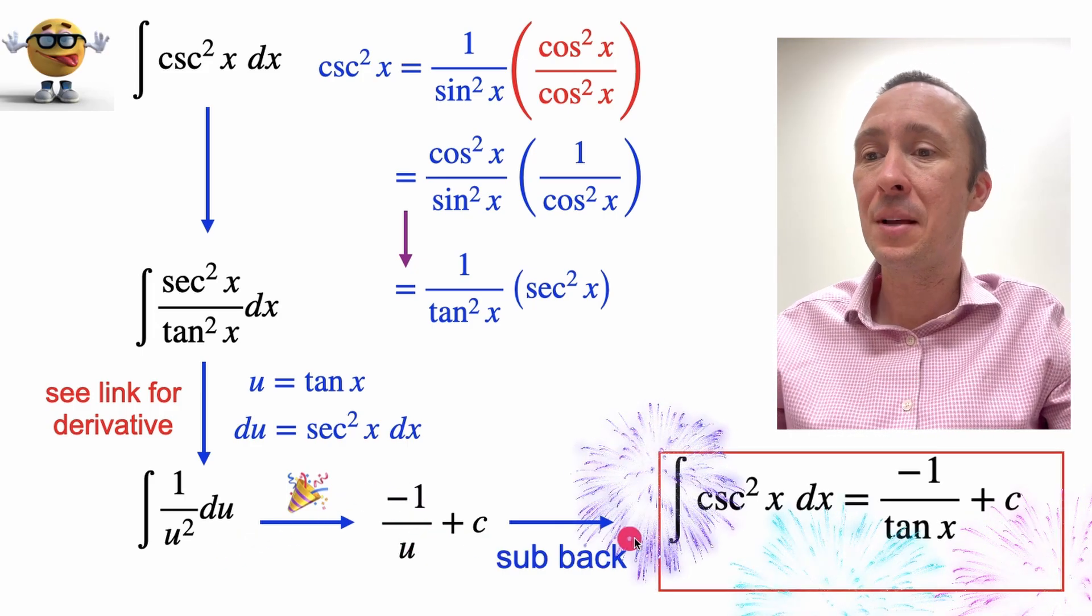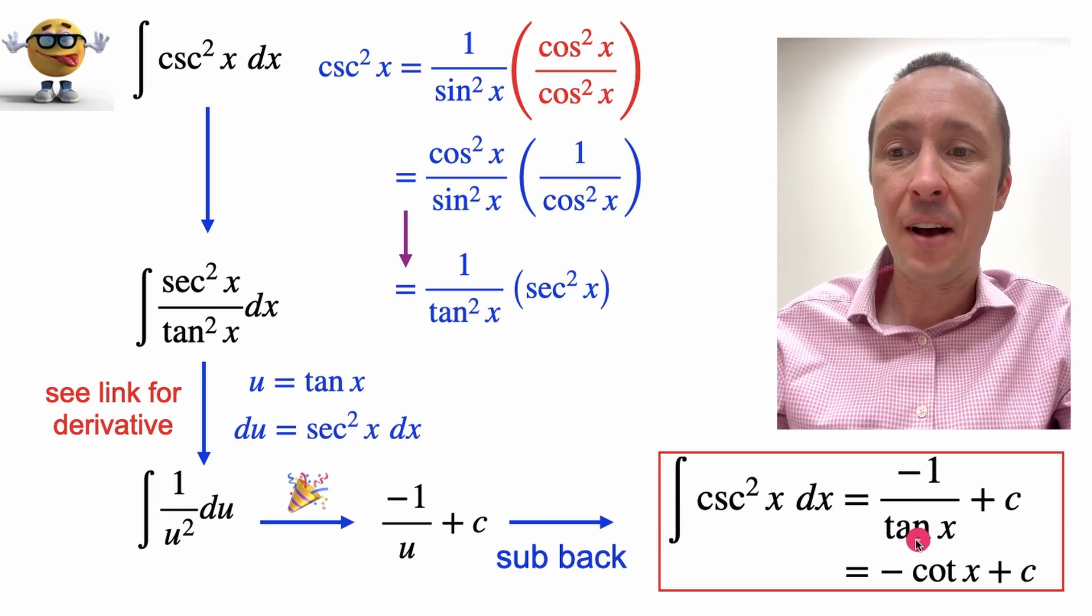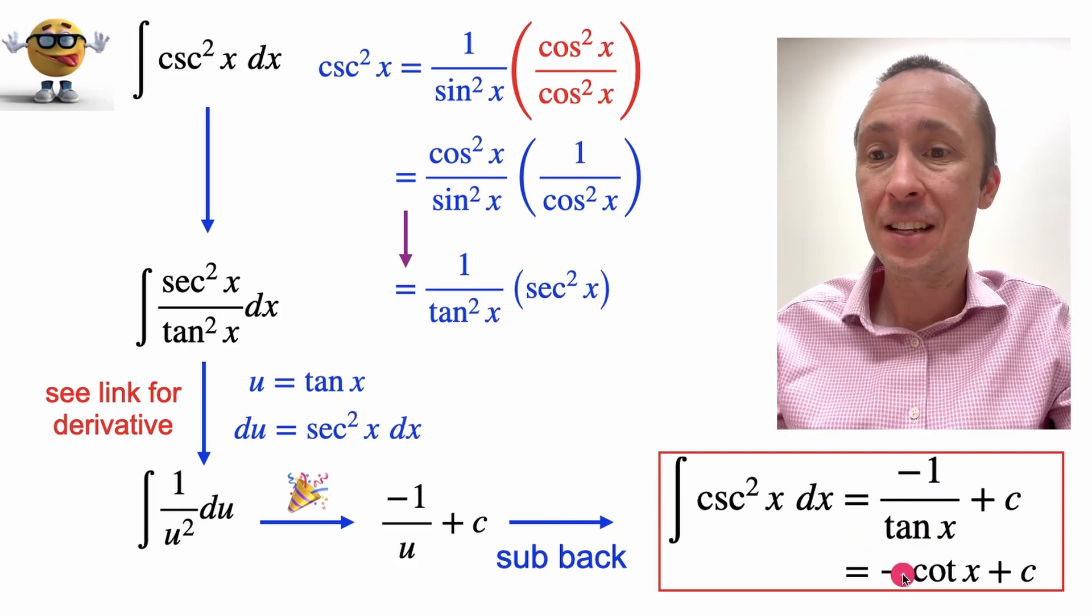And finally, to get our integral, we'll substitute back in all its glory what u is. u is tan x, and 1 divided by tan x is cotan x. So that's it.